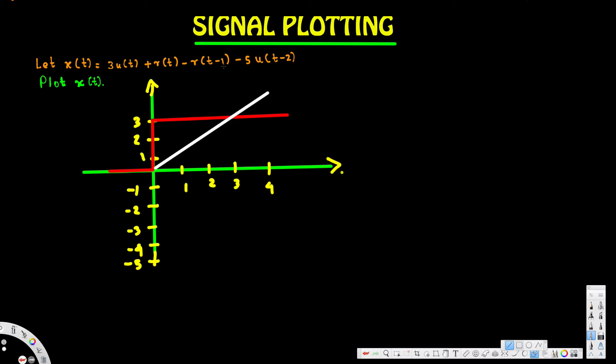The next term is -r(t-1). The negative sign means the slope is negative, and the (t-1) means it is shifted one unit to the right. So starting at t = 1, this component goes downward with a slope of -1.